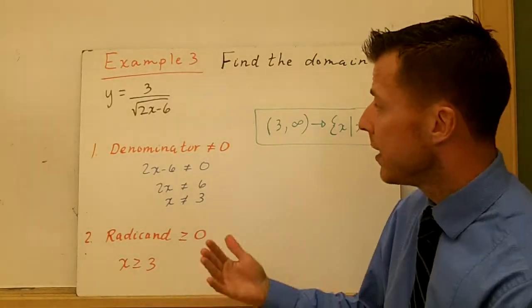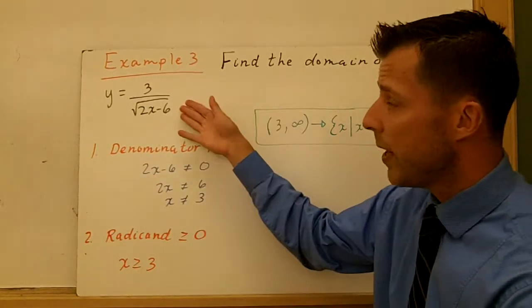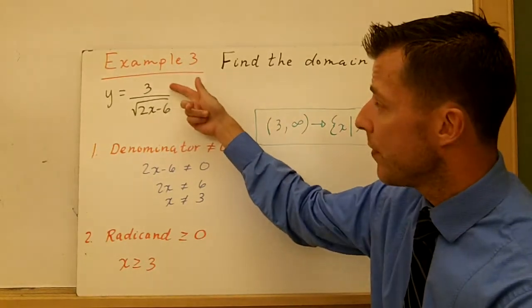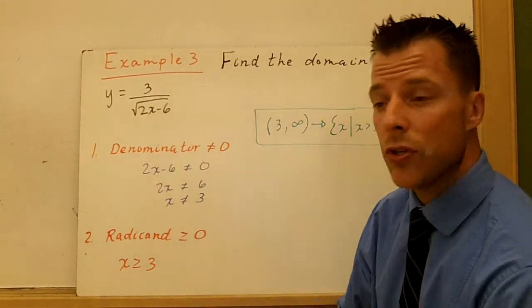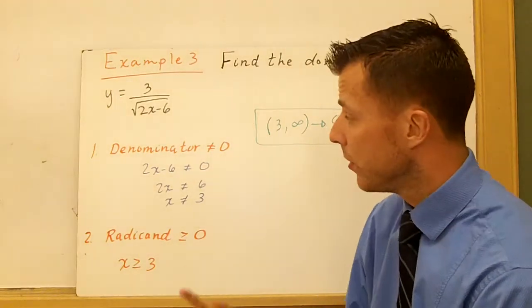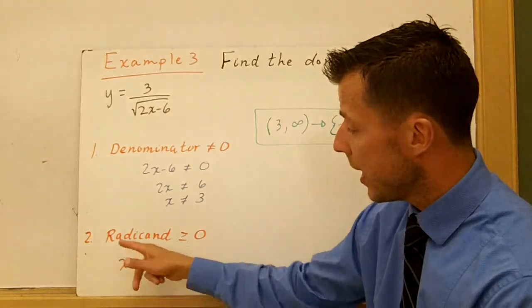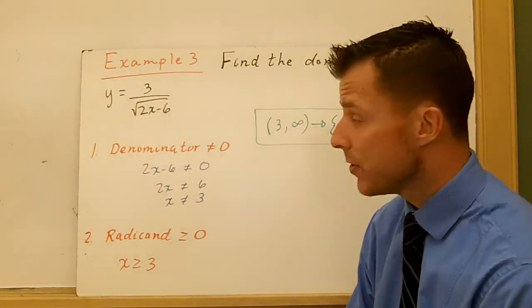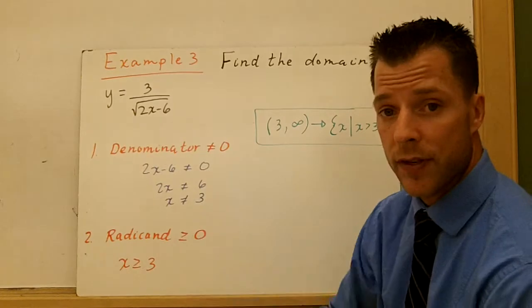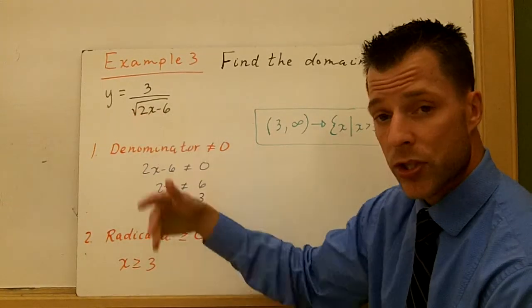Now, in example 3, I took the last example and put it in a denominator. We're finding the domain here. So we have 3 divided by the square root of 2x minus 6. There's two things that need to happen here. Number one, the denominator still can't be zero. And the radicand still has to be greater than or equal to zero because this is a positive square root, and it's an even root, so it's a square root.